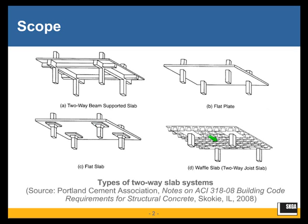The final slab system shown is a two-way ribbed system. For structural purposes, think of it this way: we take a flat plate and remove some of the tension concrete, which does not do anything for us anyway and just adds to the weight and the load. This gives a ribbed structure which is more efficient and allows us to reach longer spans more efficiently. We construct these waffle slabs using pan forms available for rent, which are placed on a flat soffit to create the ribbed structure.